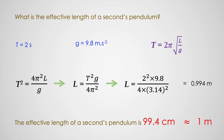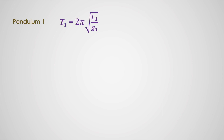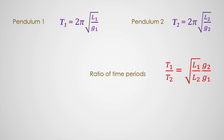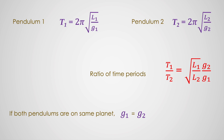As promised, we will be solving some simple numerical problems of the simple pendulum. Let us look at how we can simplify all this. If we have pendulum 1 with time period T1 equals 2π√(L1/g1), and pendulum 2 with time period T2 equals 2π√(L2/g2), then the ratio T1/T2 equals √(L1·g2 / L2·g1). If both pendulums are on the same planet, g1 and g2 are equal, so T1/T2 equals √(L1/L2). These are the two formulas we can use to solve problems.